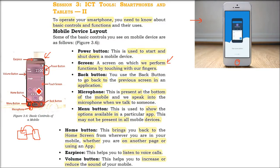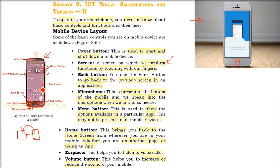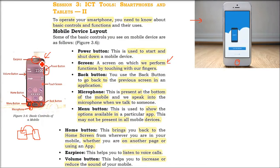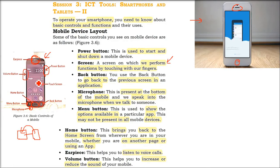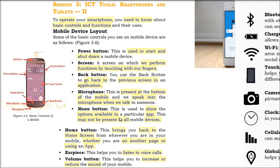The Home button is important because when you open a computer, there is a desktop — that is your home screen. Similarly, a mobile is also a small computer and it also has a home screen. So the Home button takes you to the basic screen. Then we have the Earpiece. When you are talking, you have to listen also — this is where you listen to voice calls. Then the Volume button controls the level of sound; you can increase or decrease it depending on your environment. This is the mobile device layout.